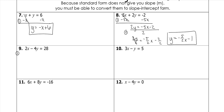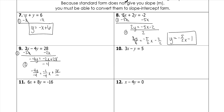Subtract your x to the other side, or add it if it's already negative, giving negative 2x plus 28. Then divide everything by b, which means negative 4y divided by negative 4, negative 2 divided by negative 4, and 28 divided by negative 4. These cancel giving y. They can both be divided by 2: negative 2 over negative 4 simplifies to 1 half, so it's 1 half x. And 28 divided by 4 is negative 7.